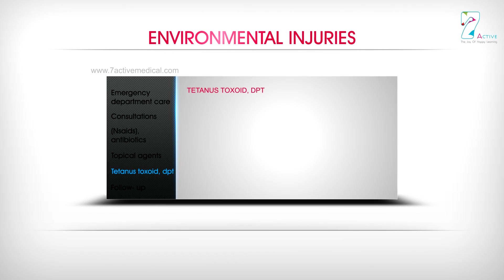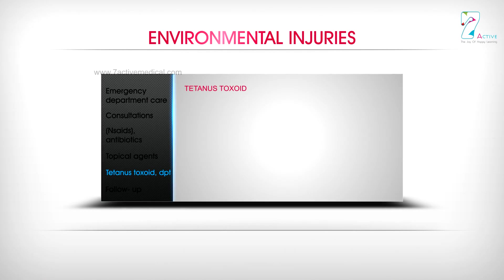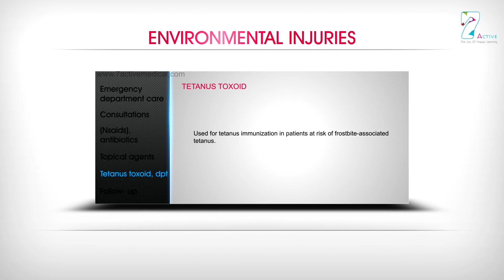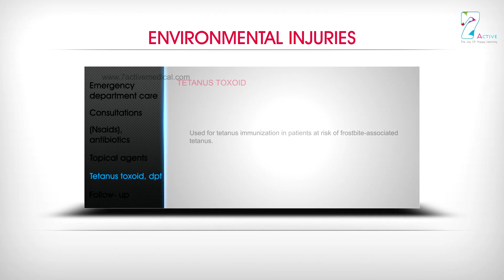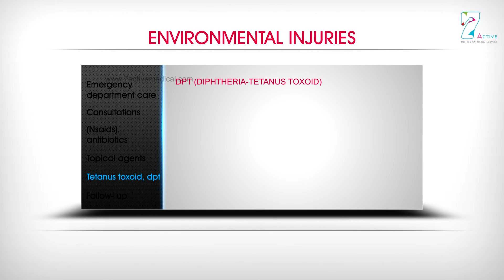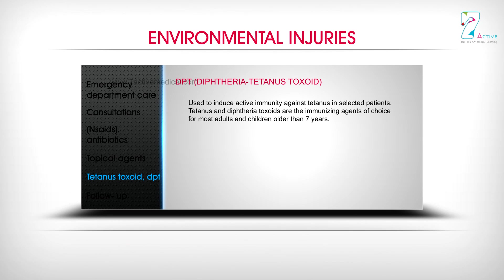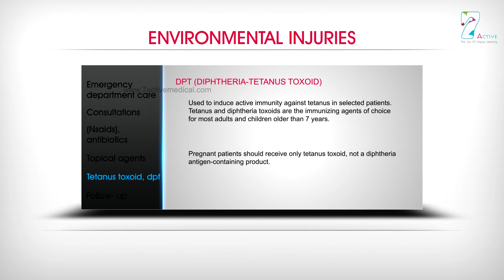Tetanus toxoid: Used for tetanus immunization in patients at risk of frostbite-associated tetanus. DPT (diphtheria tetanus toxoid) is used to induce active immunity against tetanus in selected patients. Tetanus and diphtheria toxoids are the immunizing agents of choice for most adults and children older than 7 years. Pregnant patients should receive only tetanus toxoid, not a diphtheria antigen-containing product.